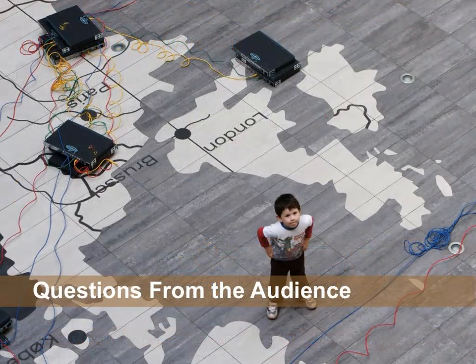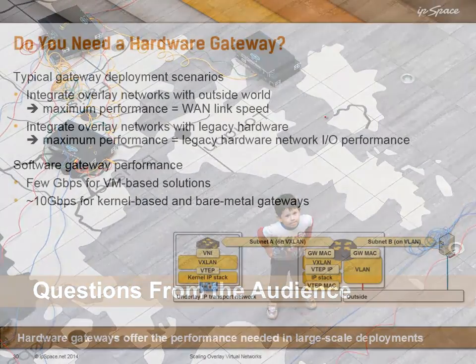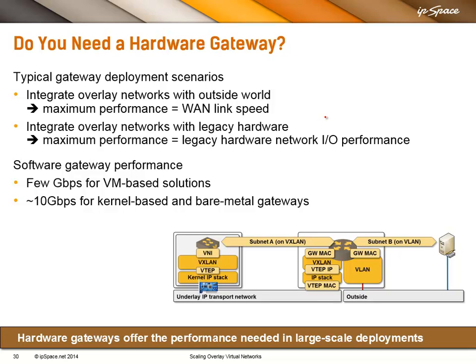A really good question: when you quote performance in gigabits per second, is this for iMix or maximum packet sizes? iMix is approximately 500-byte packets, and on a typical Linux-based appliance using the default Linux TCP stack, you would get a bit over 1 gig. Maximum packet sizes would give you 2 to 3 gigs. It also depends on what you're doing — if you're doing packet forwarding, you're limited by packet size, but if you can do TCP offload, you can push way more through the VM because the hardware NIC is doing some of the hard work. Before buying any solution, do some performance testing based on the workload you expect in your production deployment.